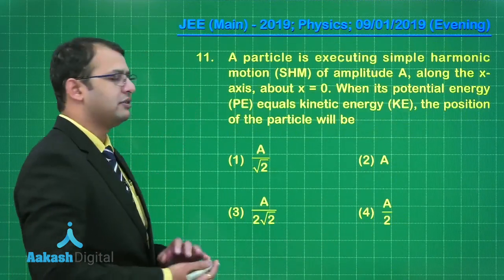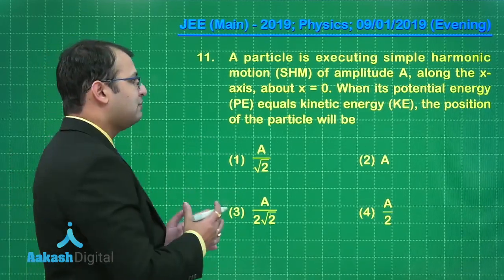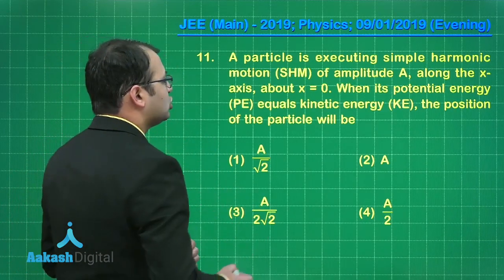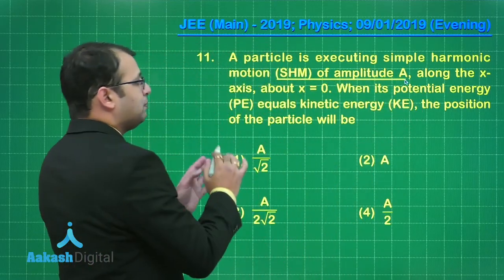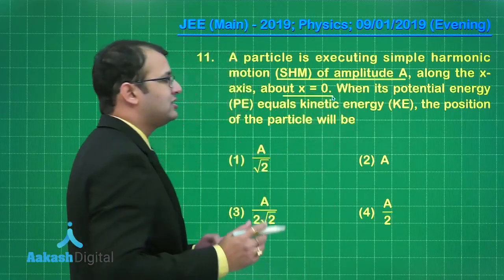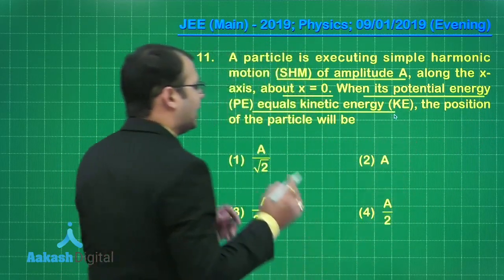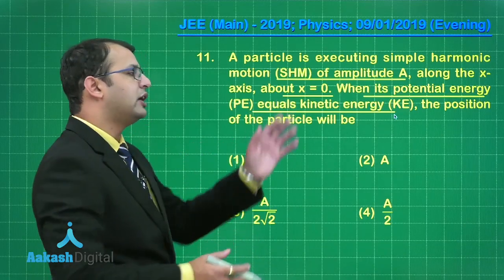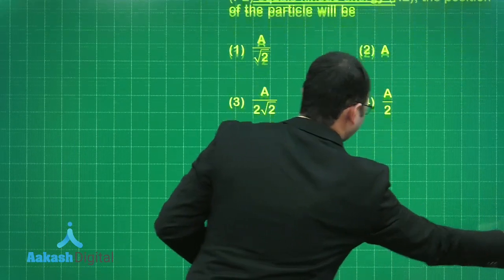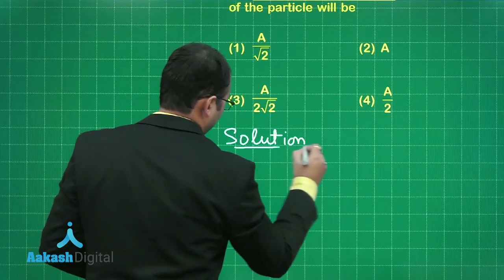Let's move to question number 11, which belongs to the oscillations and waves section, topic simple harmonic motion. A particle is executing simple harmonic motion of amplitude A along the positive x-axis about x equals 0, meaning the mean position is at the origin. We have to find the position where potential energy equals kinetic energy, expressed in terms of amplitude A.